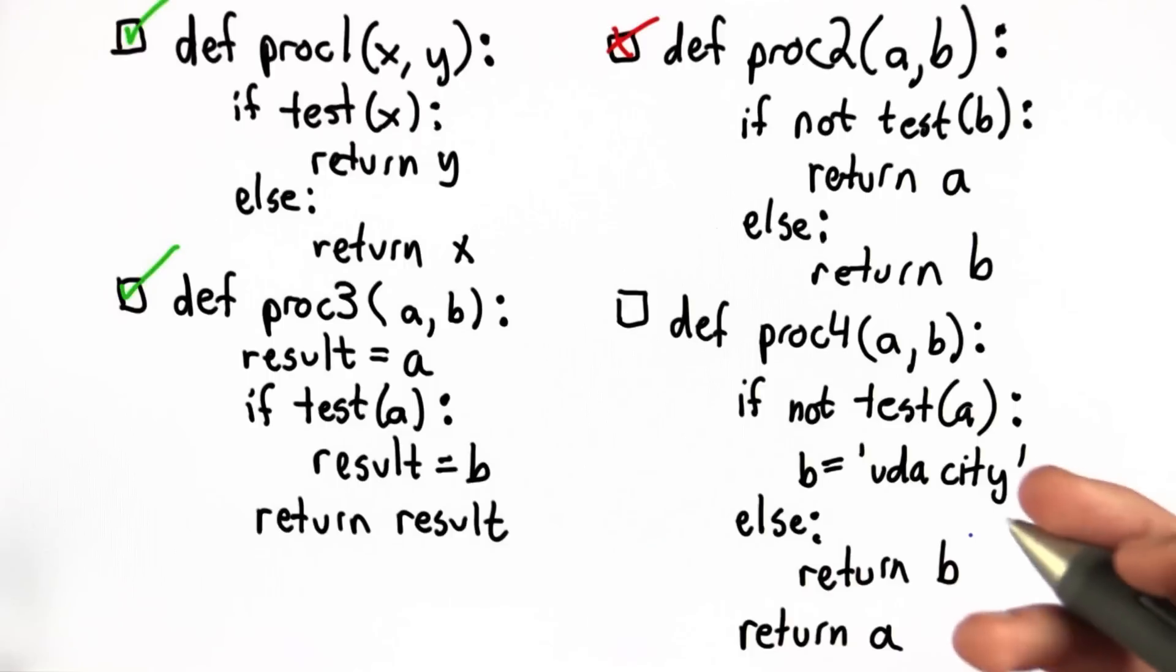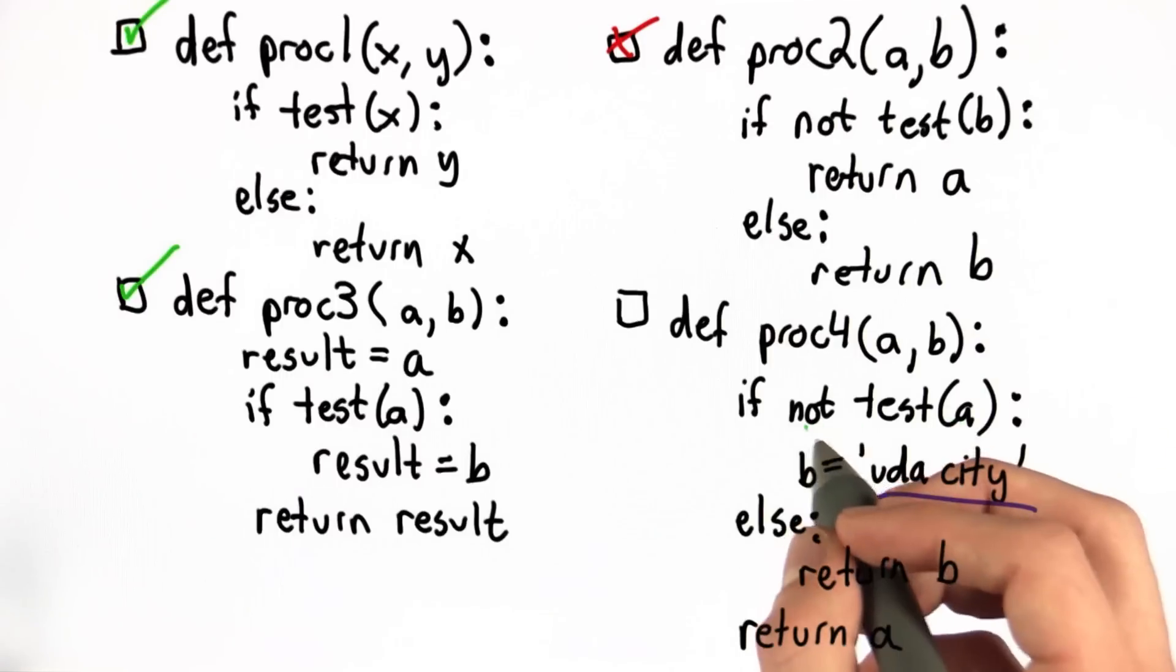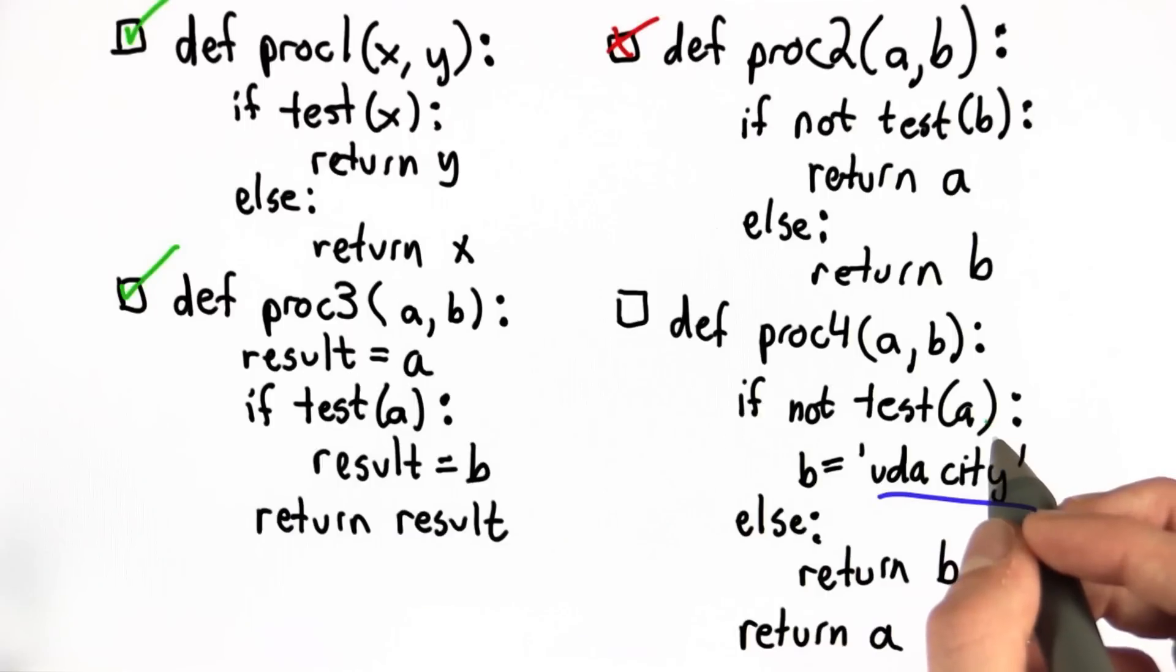Now we have the last function, proc 4. It might throw you off that you see Udacity in quotes here, which is not present in any other function, but it's important we work our way through the problem. If test a is true, then not test a is false. So we return b. So if test a is true, we return b. That matches with the original definition.